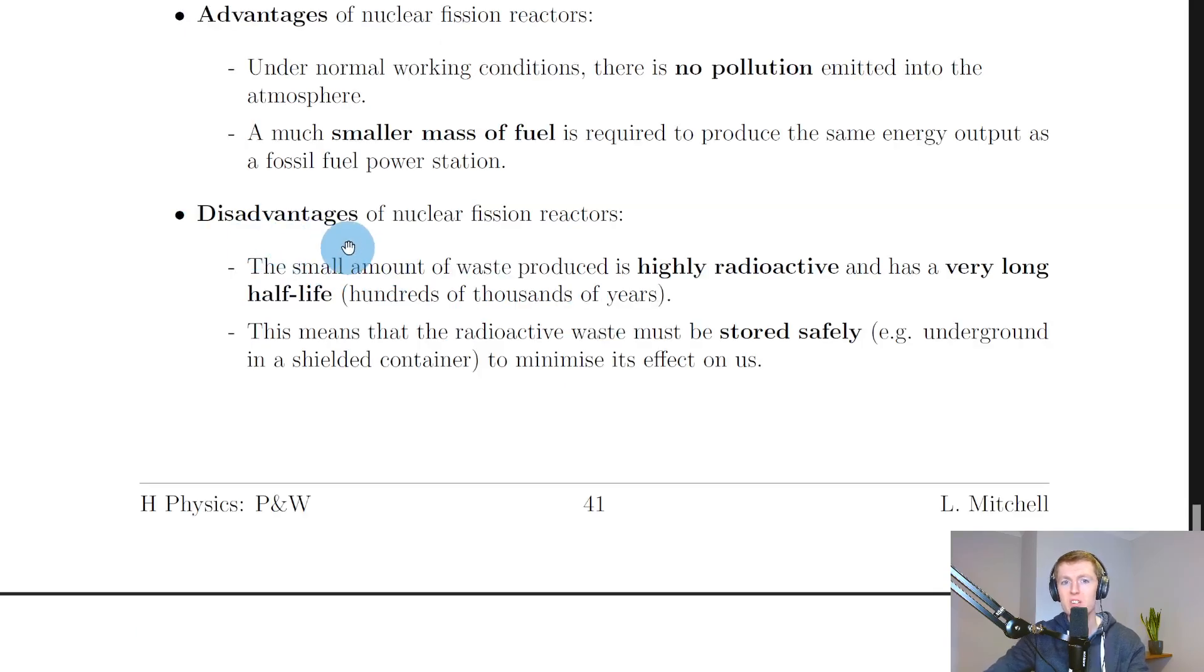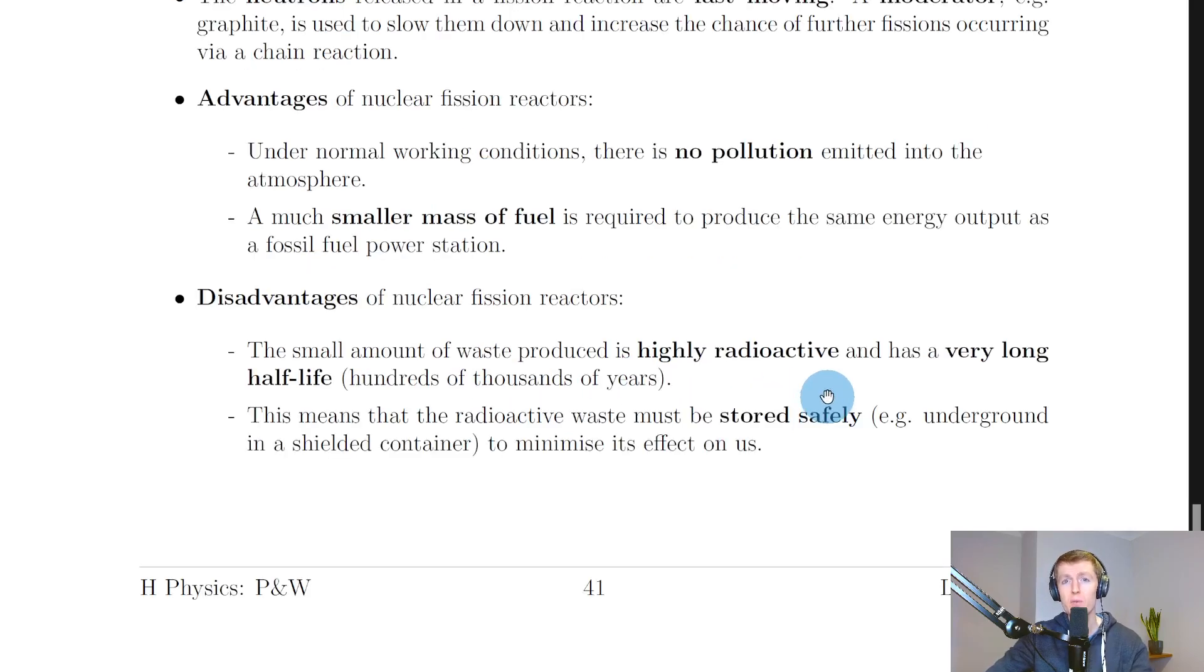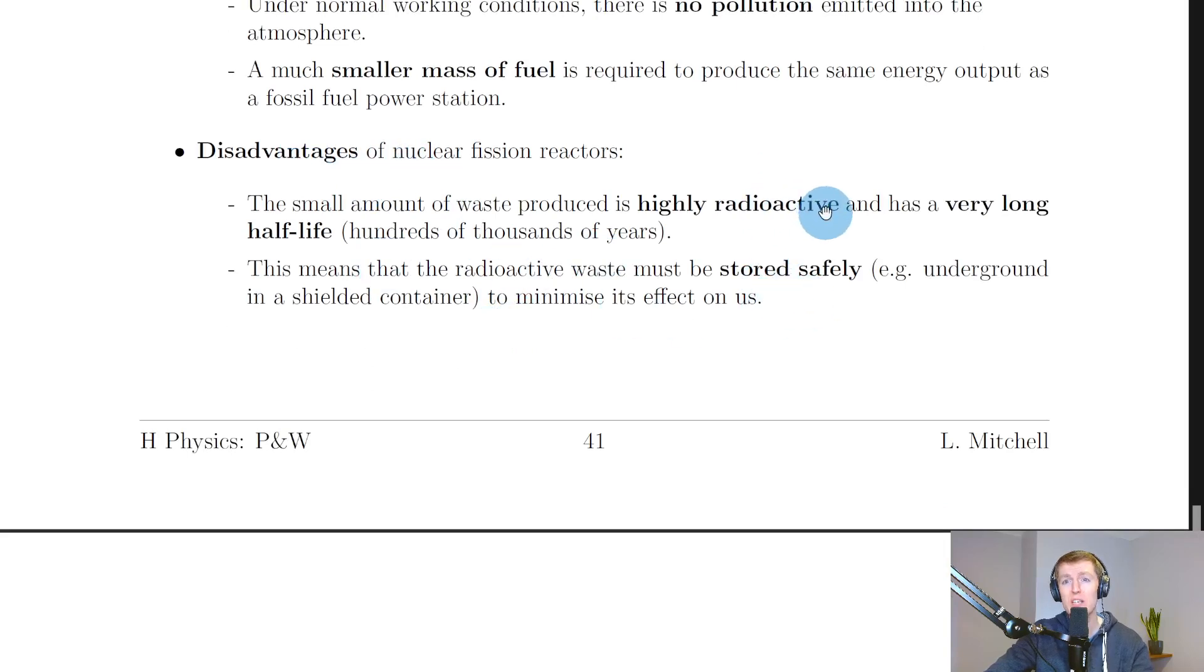And then we have two disadvantages here. So firstly, the small amount of waste produced is highly radioactive and has a very long half-life, up to hundreds of thousands of years. And another disadvantage is that this means that the radioactive waste must be stored safely, for example underground in a shielded container or underwater, to minimize its effect on us. So it's helpful to remember some advantages and disadvantages of nuclear fission reactors for things like open-ended questions and so on. So remember, two advantages are no pollution and smaller mass of fuel required, whereas some disadvantages would be highly radioactive waste with a very long half-life and the challenges involved in storing it safely.